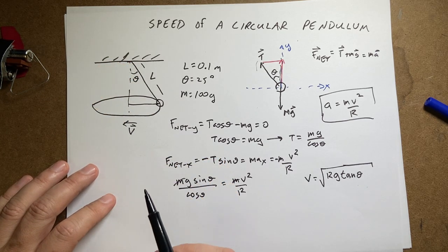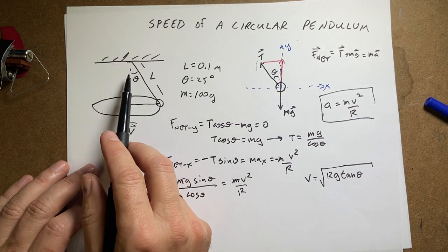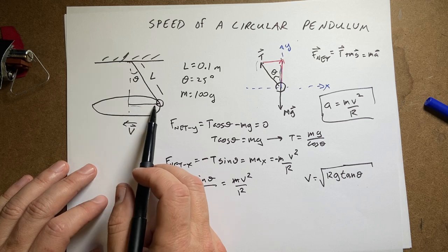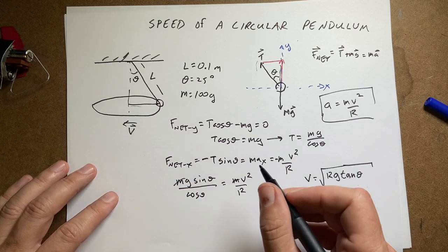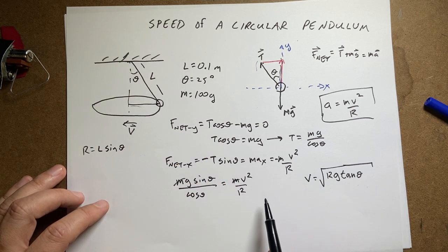But I can find it, right? Because now I look at this triangle. Here's 0.1 meter long. The angle is 25 degree theta. So this would be L sine theta. So R equals L sine theta. So I can put that in over here.